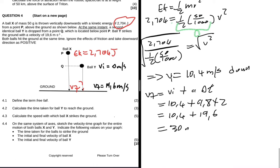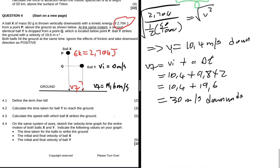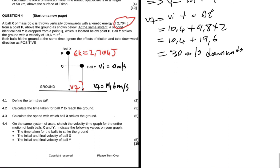So we have 10.4 plus 19.6, which gives you 30 meters per second down. We're only interested in the speed, so we don't have to give the direction, but it doesn't hurt doing so.